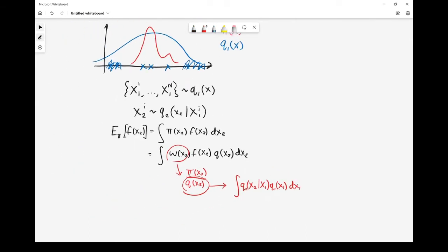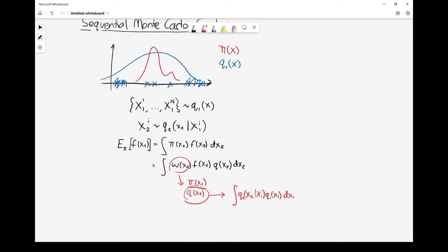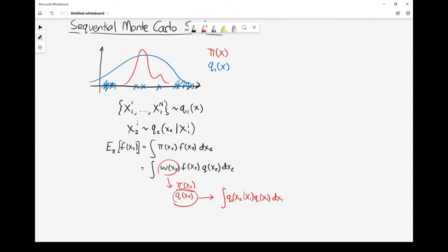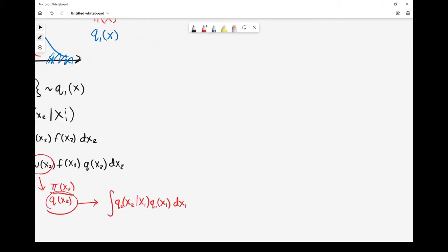Instead, we think we have generated samples over two iterations. In this case, where we're looking at a 1D target, we can think, we can imagine that actually what we're doing is we're targeting some kind of two-dimensional target.